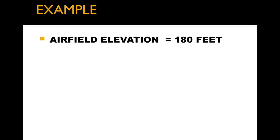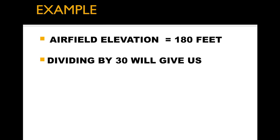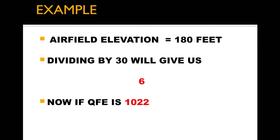Explaining with the help of a simple example — suppose the airfield elevation is 180 feet. So divide 180 by 30, which gives us 6. Now suppose QFV is 1022. To calculate QNH, you just need to add 1022 and 6, which will be 1028.